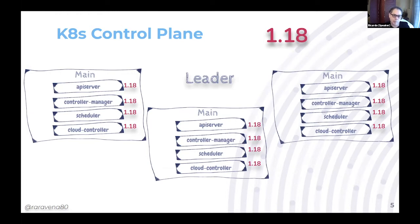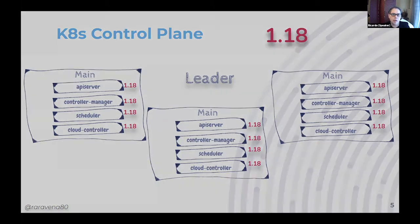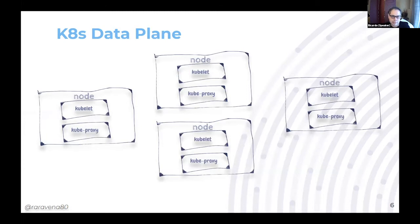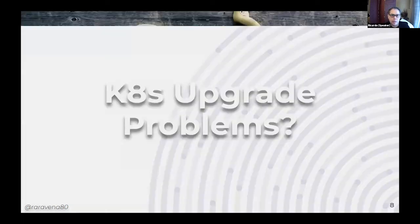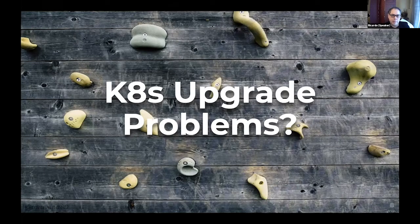When you have a specific Kubernetes version, all those control plane components — the controller manager, API server, cloud controller — all have that same version. In this example, they all have version 1.18. That's the recommended practice, though some people don't run it this way. Similarly with the data plane, your Kubernetes nodes run workloads, and the most critical components there are the kubelet and kube-proxy, which should also match that same version.